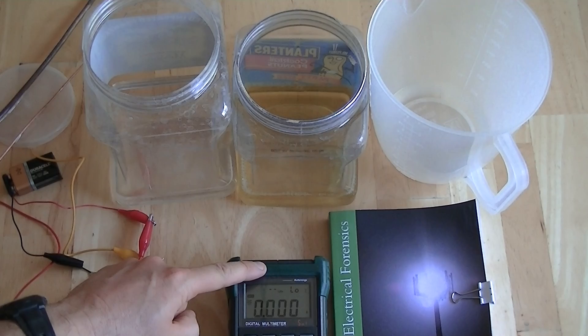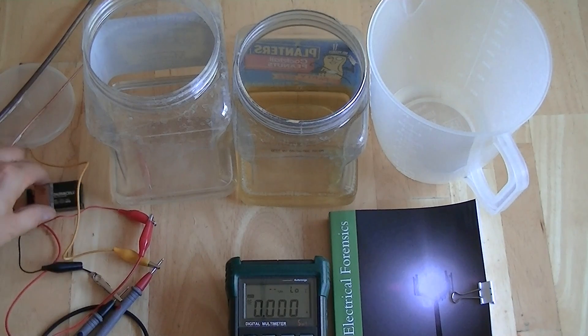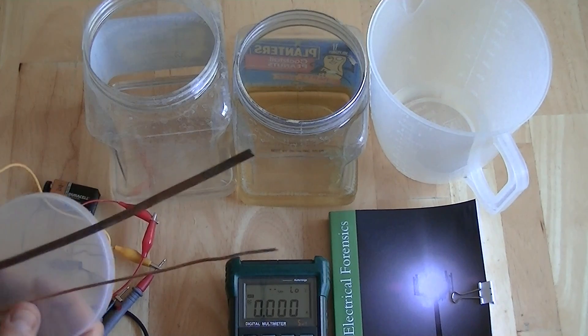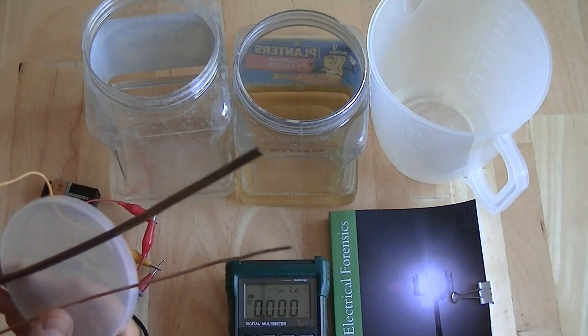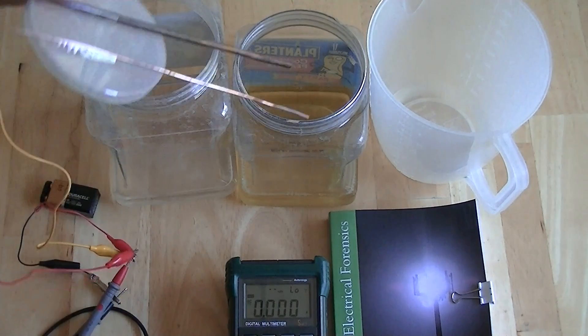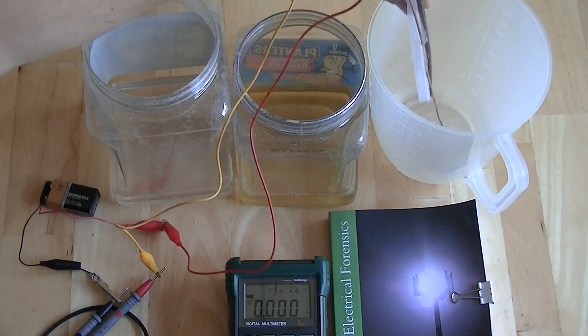We're going to pass DC current through it using this 9 volt battery, and our setup is arranged so that the surface of these probes will pass current through them. So we're going to test the first water by placing our probes in.